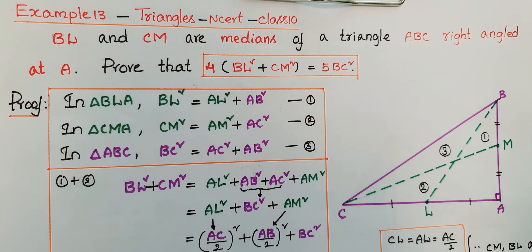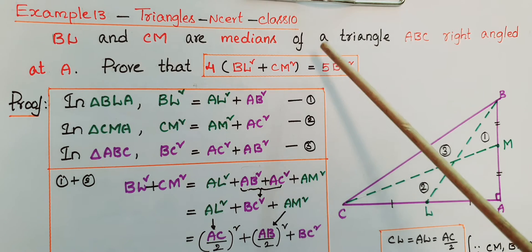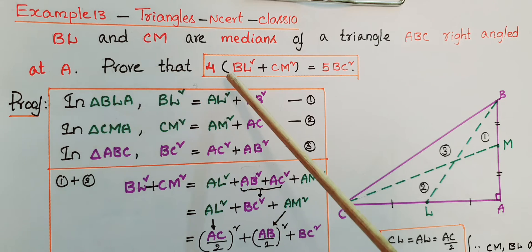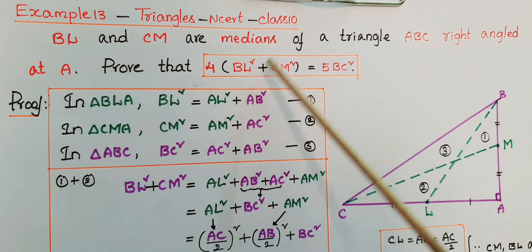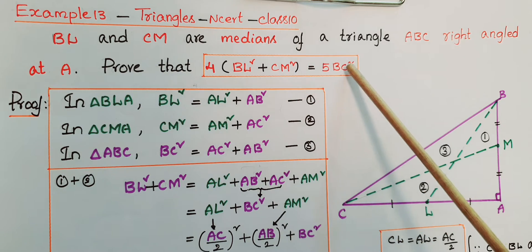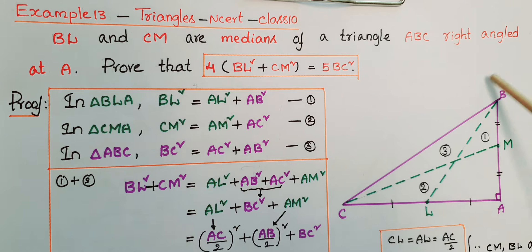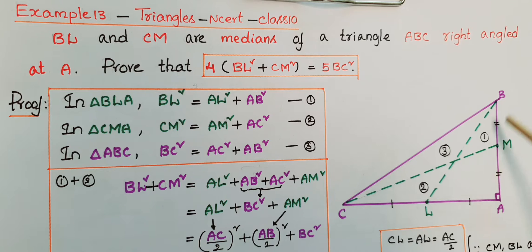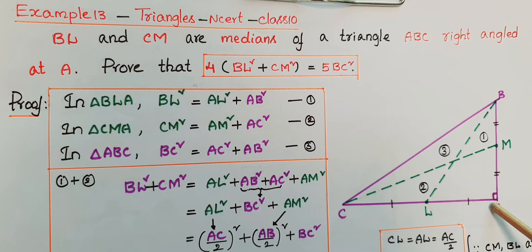Hello everyone, today I am going to tell the solution of Example 13 from the Triangles chapter from NCERT Class 10. BL and CM are medians of a triangle ABC, right-angled at A. Prove that 4(BL² + CM²) = 5BC². So here in triangle ABC, the angle is 90 degrees at A, and BL and CM are medians of this triangle. We know that a median divides a side into two equal parts.